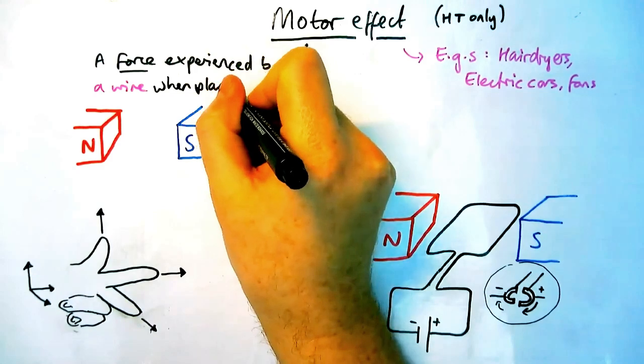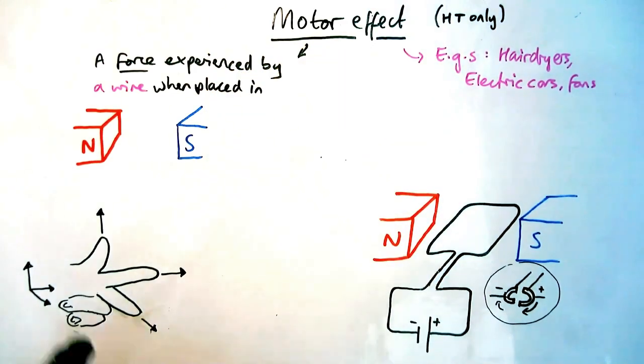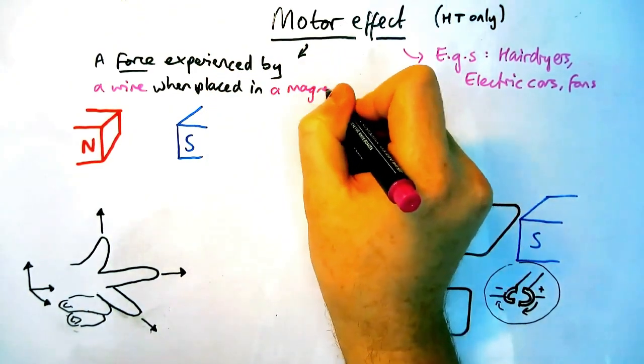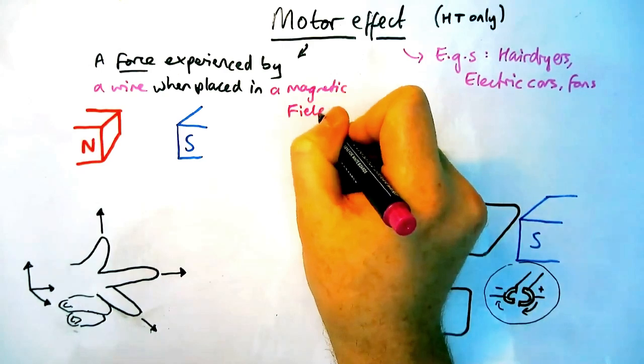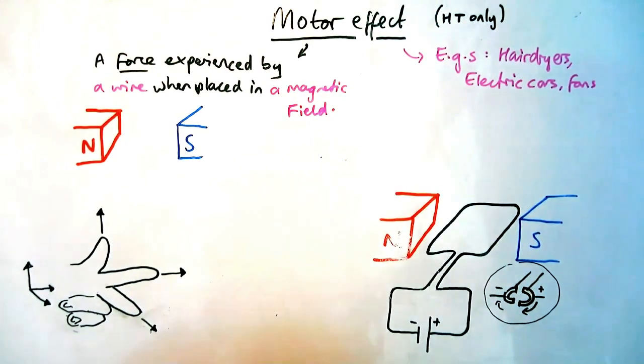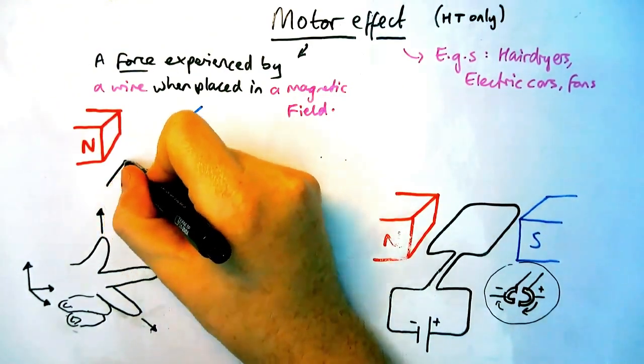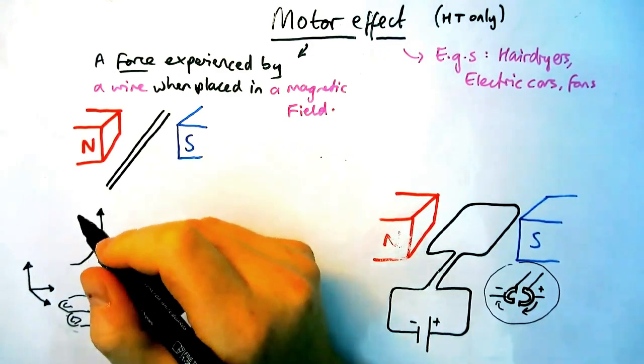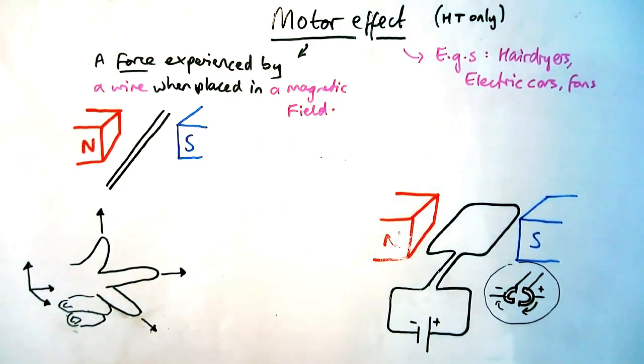So in the example down here we're going to have a straight piece of wire and there is going to be a force acting on it in a certain direction. For this example the current is going to be flowing towards the bottom left of the screen which is going to become important later.